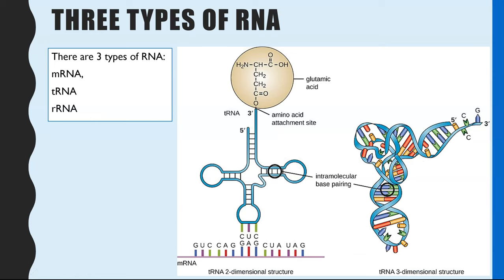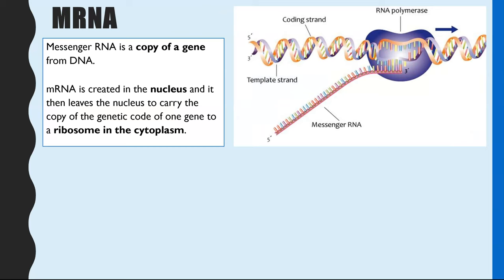One type of RNA combines with proteins to create ribosomes. There are three types of RNA: mRNA, tRNA, and rRNA. We'll start with mRNA. The M stands for messenger, so mRNA is a polymer that is a copy of one gene in your DNA. Inside the nucleus, DNA can slightly unravel at the start of protein synthesis, and a copy of that unraveled DNA is made in what we call mRNA.